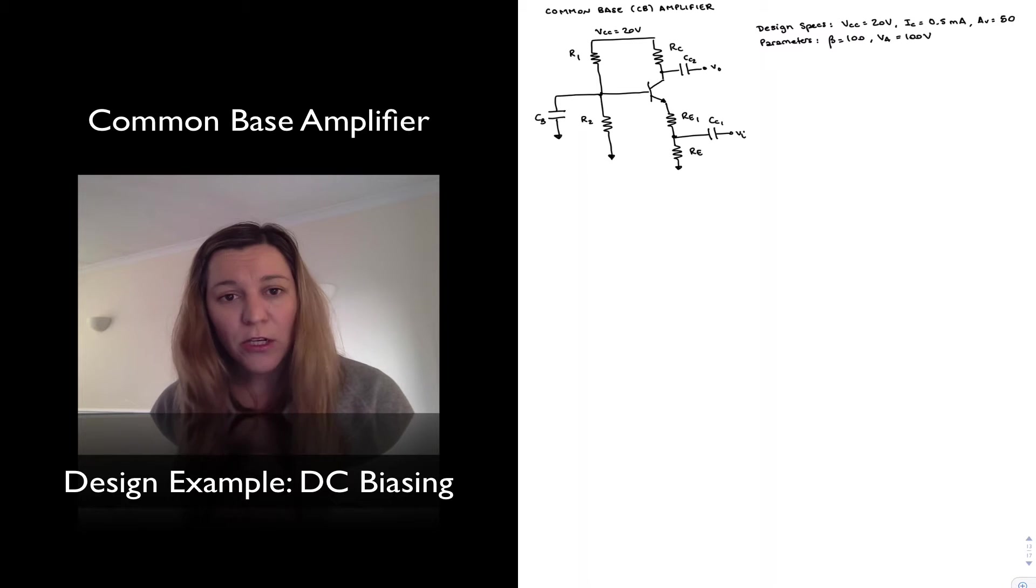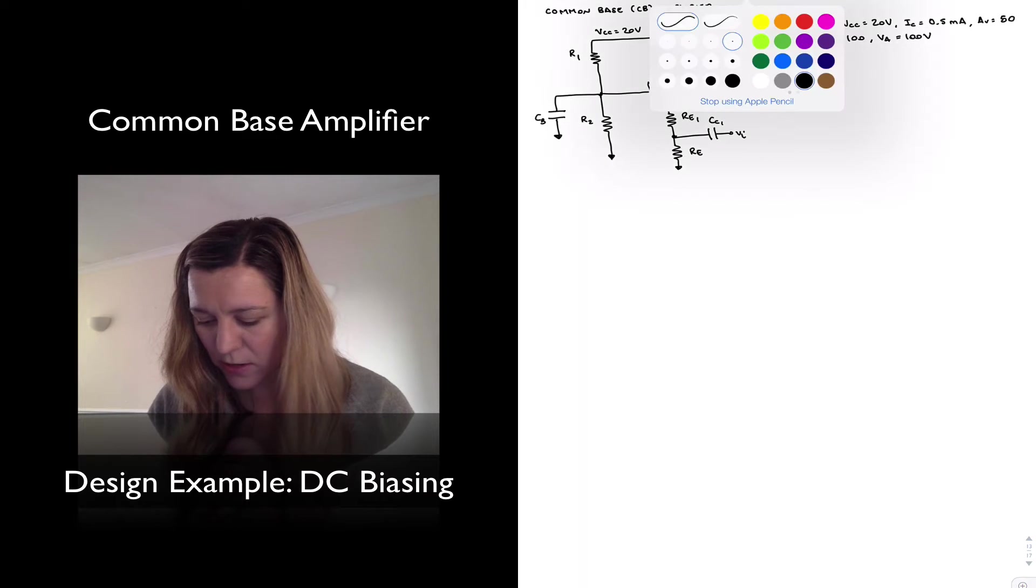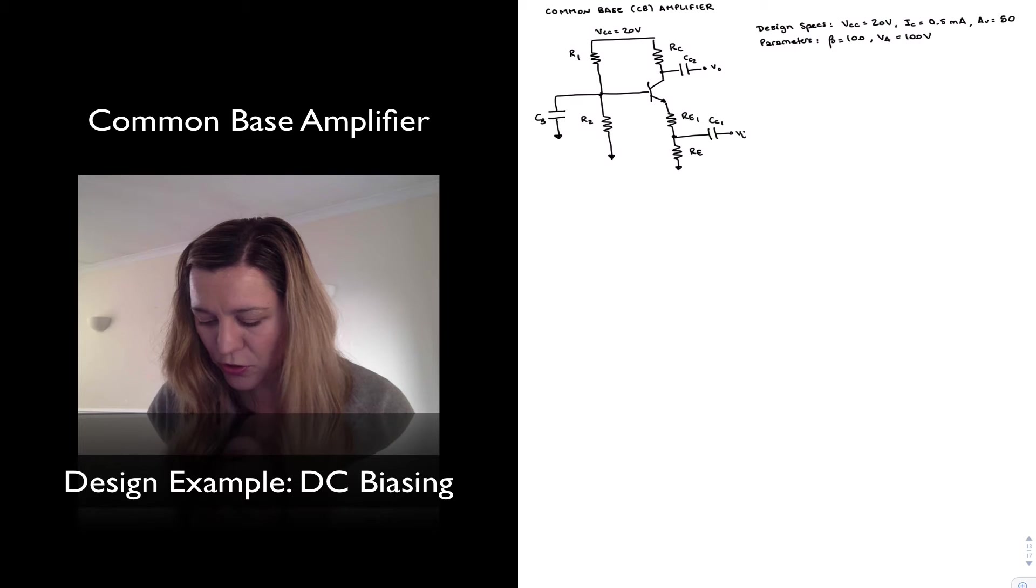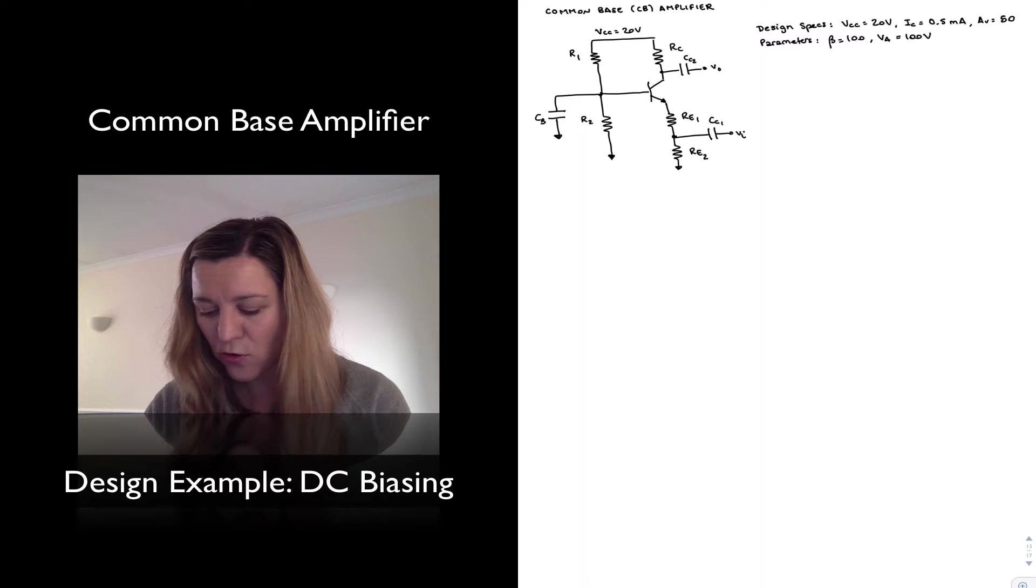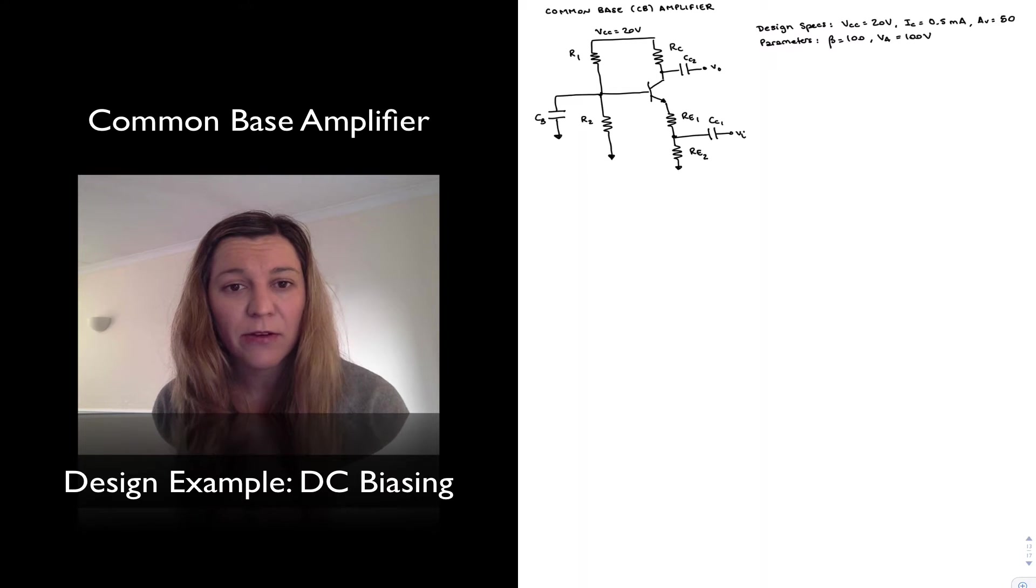First of all, you may notice that I have changed a little bit the emitter resistor by adding a split resistance, RE1 and RE2. I have done this for the exact same reason I did it in the common emitter amplifier. If I have all my emitter resistance set below the capacitor, we have seen that my voltage gain was equal to RC divided by little RE, because the whole of the emitter resistance gets bypassed.